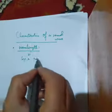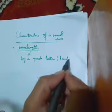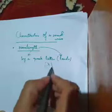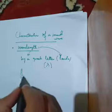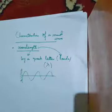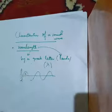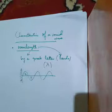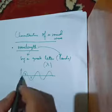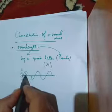First we will talk about wavelength. Wavelength is represented by a Greek letter called lambda (λ). Wavelength is simply the length of a wave. A wave consists of a crest and a trough. The length of the combination of a crest and a trough is called wavelength. The peak of the wave is called the crest, and the depression is called the trough.